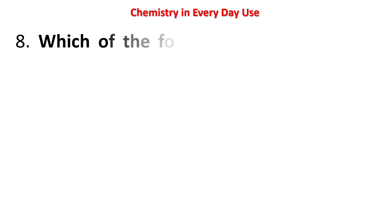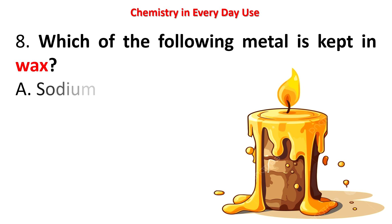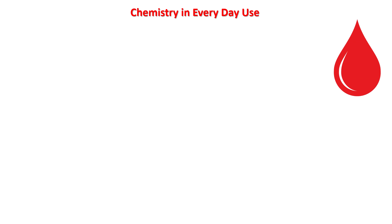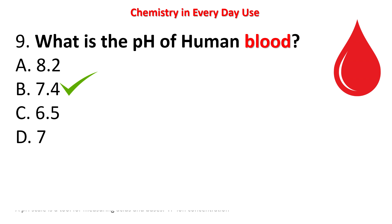Next question: which of the following metals is kept in wax? Options: sodium, lithium, silver, magnesium. The answer is lithium. Next question: what is the pH of human blood? Options: 8.2, 7.4, 6.5, 7. The answer is 7.4.